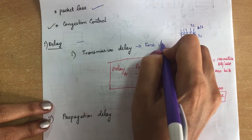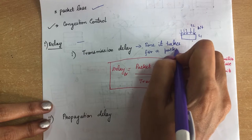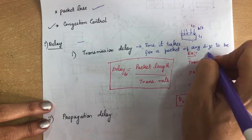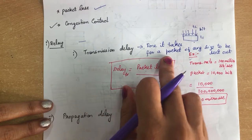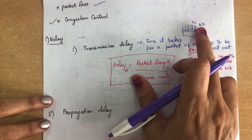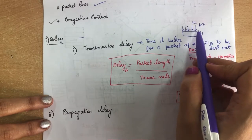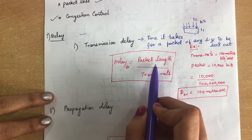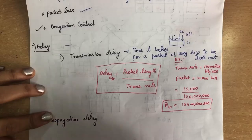Transmission delay is the time it takes for a packet of average size to be sent out from the sender. Whenever you are putting the bits into the packet, there will be a transmission delay. This can be calculated using the formula: packet length divided by transmission rate will give you the transmission delay.